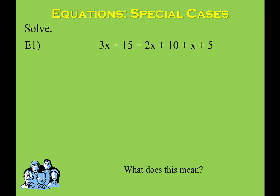So let's look at this example. We've got variables on both sides, and we have some like terms that we need to combine, so we should always try to combine like terms first. On the left side, there isn't anything to combine — I've got 3x and I've got 15, so my next step is just 3x plus 15. On the right side though, we do have some like terms. I can combine my x's together: 2x plus 1x gives me 3x.